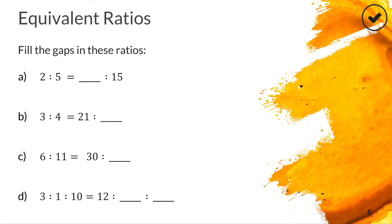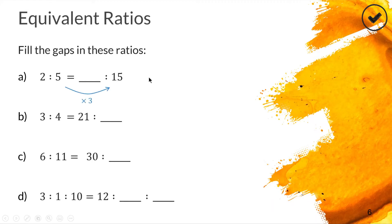Now let's have a go at some practice questions on equivalent ratios — saying the same thing with different numbers. For the first one, we have a ratio of two to five equals something to 15. The matching parts are five and 15, and we always think in terms of multiplication for ratios. What number can you multiply five by to get 15? Times three — correct! So we multiply both sides by three: two times three gives us six. Two to five and six to fifteen are the same thing.